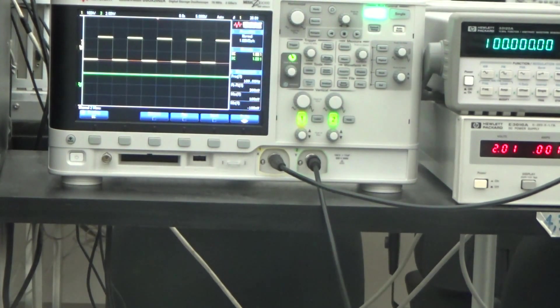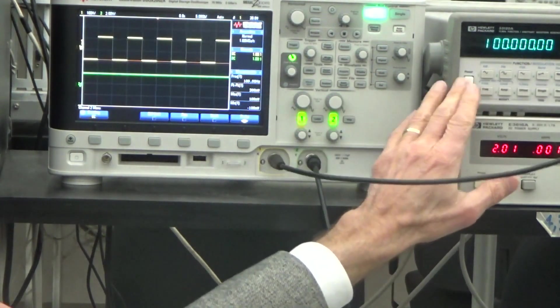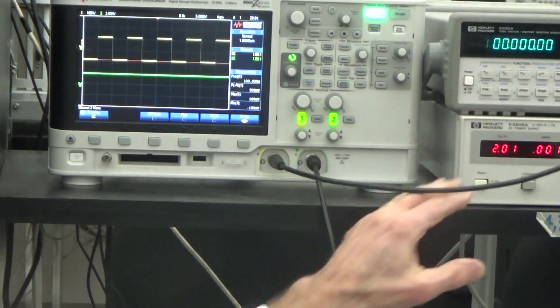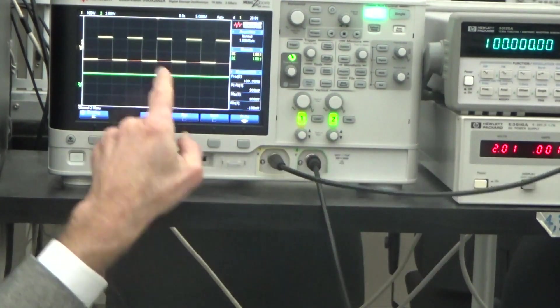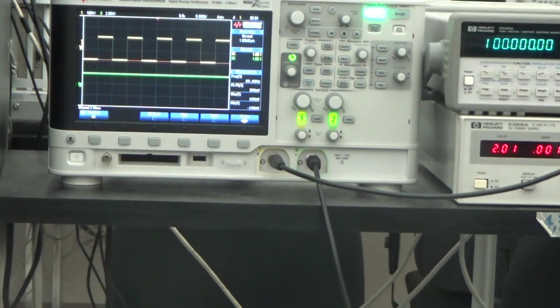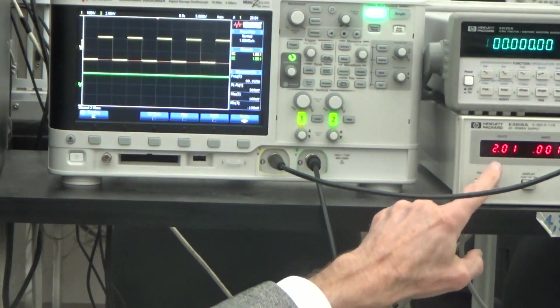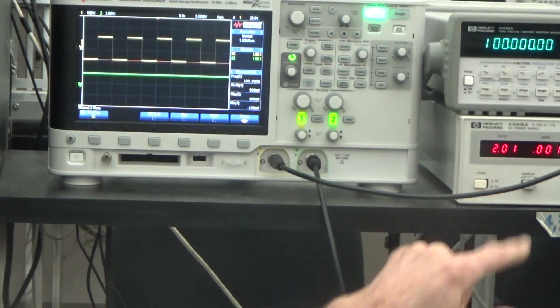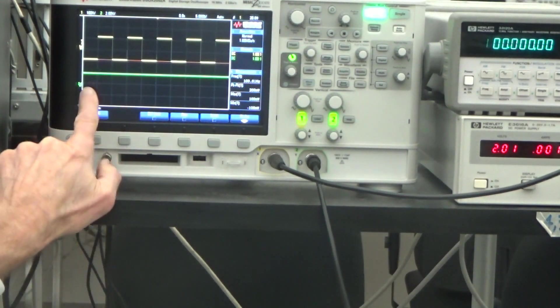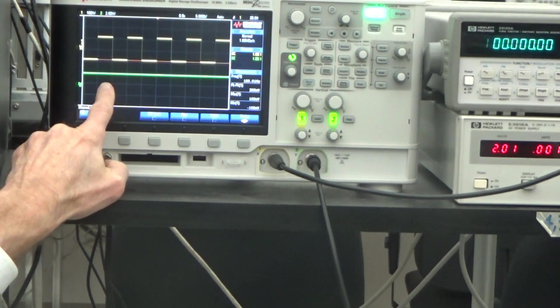So what I have here is a function generator that is set to 100 Hz square wave and it is displaying a 100 Hz square wave on the oscilloscope. And I also have a power supply that is set for 2 volts DC and you can see now that we have 2 volts of DC being displayed on the oscilloscope as well.